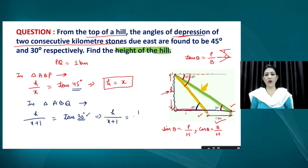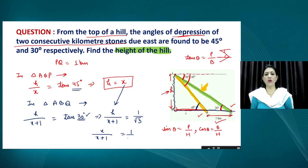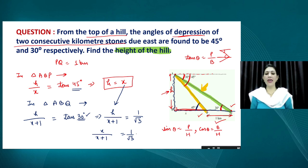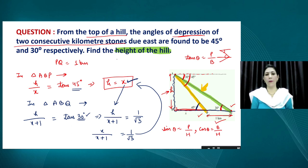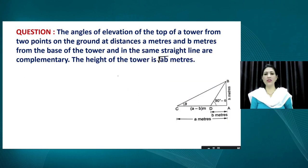The value of tan 30° is 1/√3. Putting H = x, we have x/(x+1) = 1/√3. Solving this equation gives us the value of x. Since H and x are equal, the same value will be the height of the hill. This concludes Question 1.